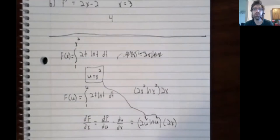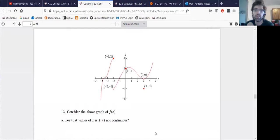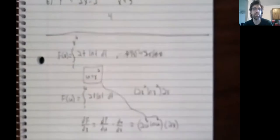There was a problem much like 13 on the other old final. But it didn't ask you about continuity. This is discontinuous at negative 2. And it's discontinuous at 3. It's continuous everywhere else.